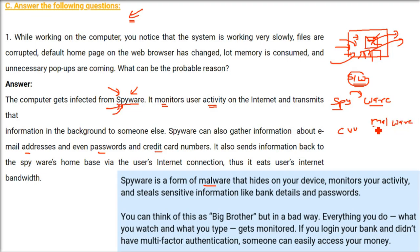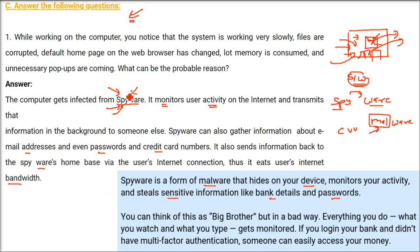Malware means anything with malicious intent, wrong intention. Spyware is a form of malware that hides on your computer where you will never know. It monitors what you are doing and steals sensitive information — money information, bank details, passwords, etc. Using the internet, it will sometimes eat up bandwidth as well.